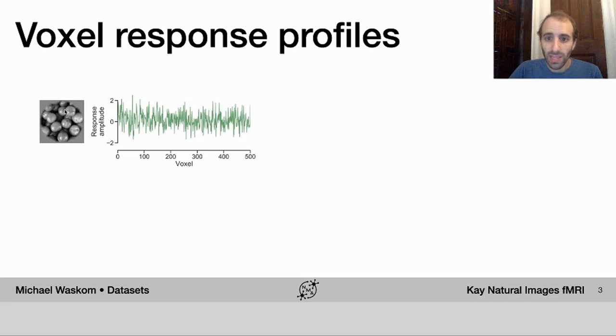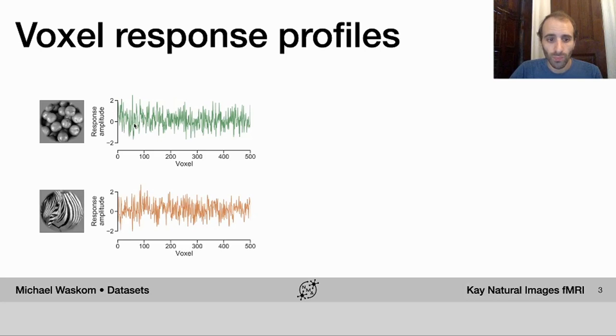So for any given image, each voxel is going to respond a little bit differently. Now the units that fMRI measures are essentially arbitrary, so the data you're working with are going to be z-scored.